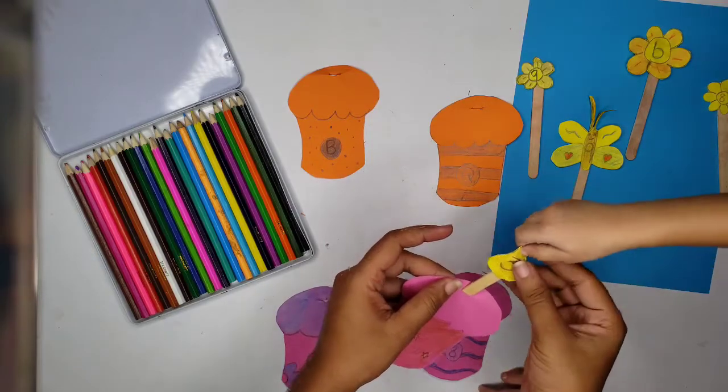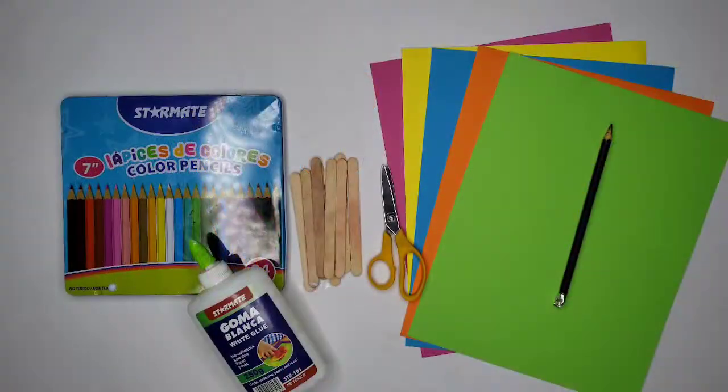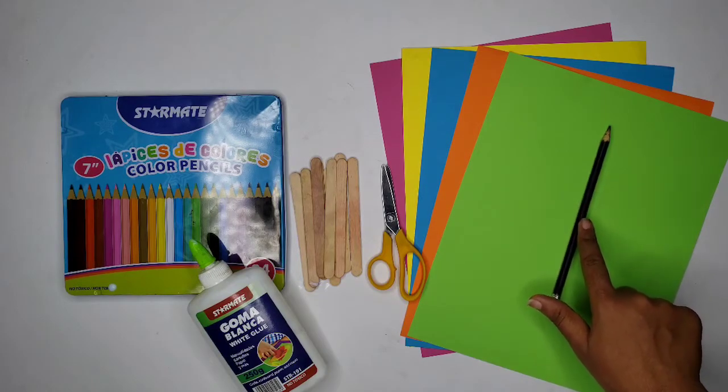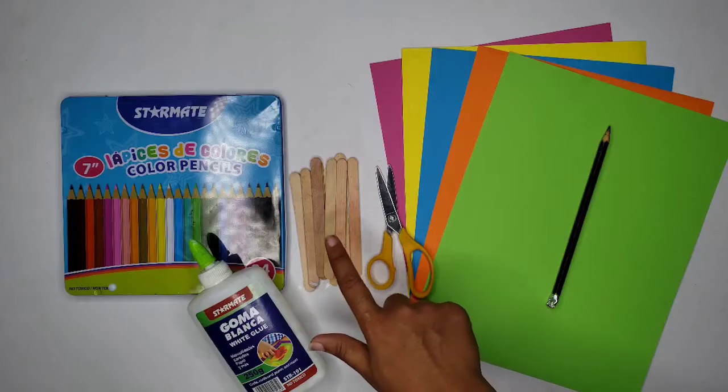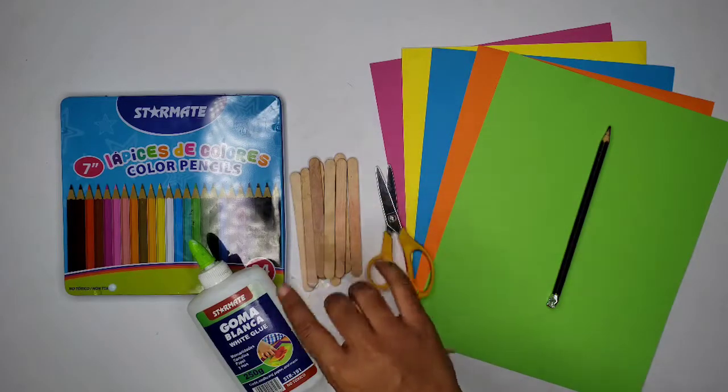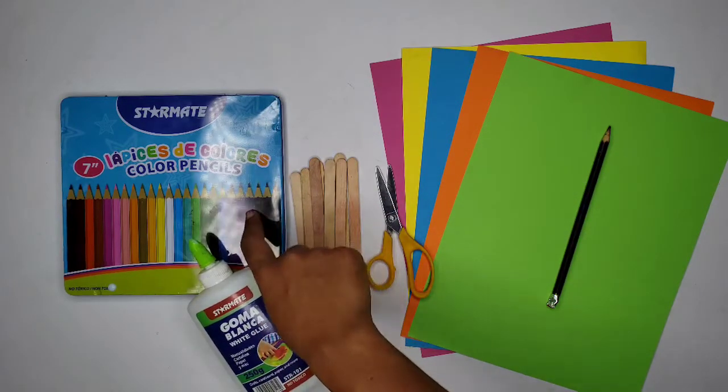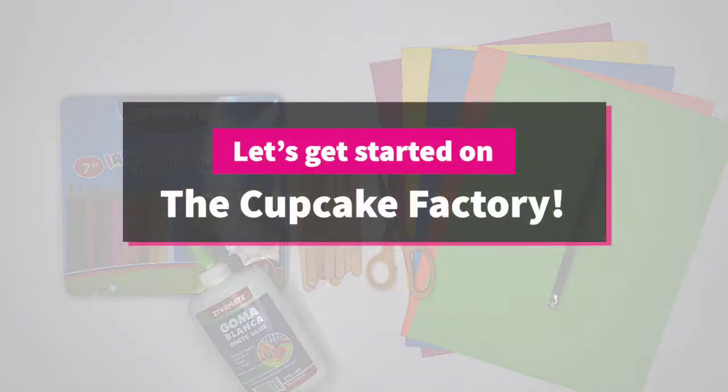Today we'll be making a fun little activity I like to call the Cupcake Factory, and it's basically a matching activity for your little ones. All you will need for this activity is some assorted sheets of Bristol board, a pencil, a scissor, some craft sticks or lolly sticks, a bottle of glue, and some color pencils or crayons.